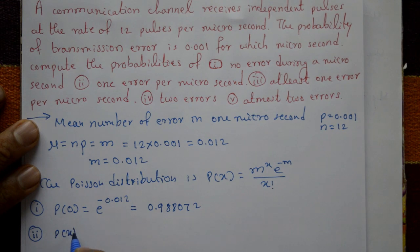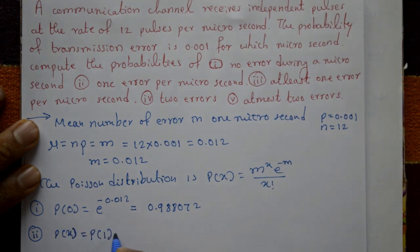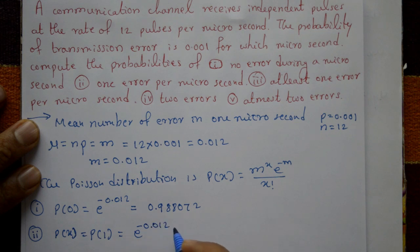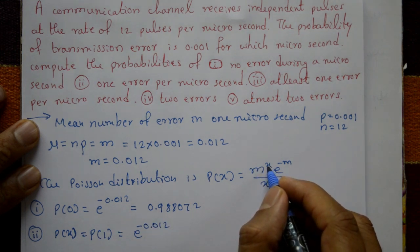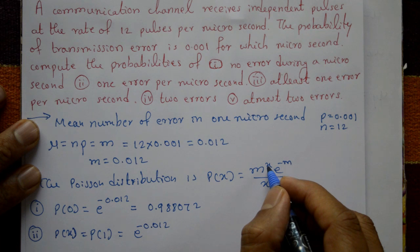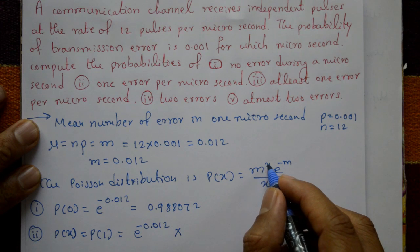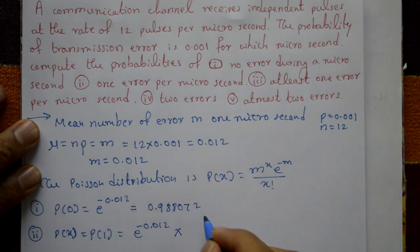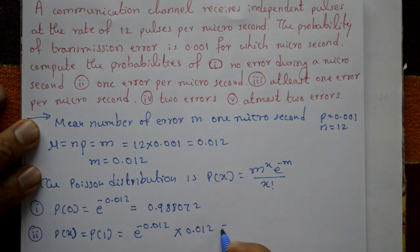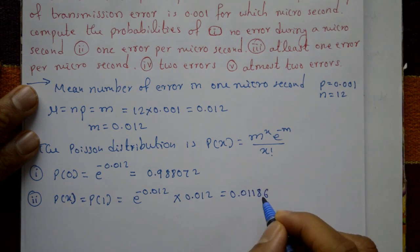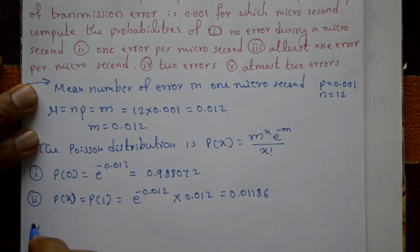Case 2: one error per microsecond. Put x equal to 1. P(1) equals e raised to minus 0.012 times m raised to 1, divided by 1 factorial, which is 1. So this equals e raised to minus 0.012 times 0.012, which equals 0.01186.